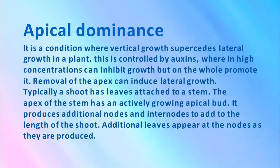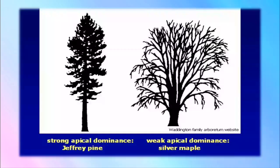Apical dominance is a condition where vertical growth supersedes lateral growth in a plant. It is controlled by auxins, where high concentration can inhibit growth but on the whole promotes it. Removal of the apex can induce lateral growth. Typically a shoot has leaves attached to a stem; the apex of the stem has an actively growing apical bud, which produces additional nodes and internodes to add to the length of the shoot. Additional leaves appear at the nodes as they are produced. You can observe here in the diagram strong apical dominance and weak apical dominance.